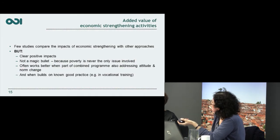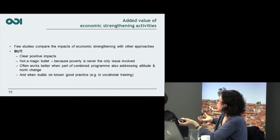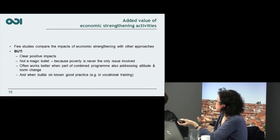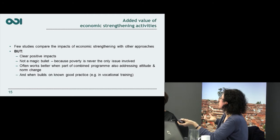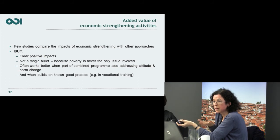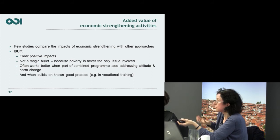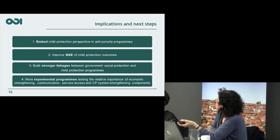Did economic strengthening add value? Few studies compared its impacts with other approaches, but we can say there were some clear positive impacts. It is certainly not a magic bullet, because poverty is never the only issue involved. Economic strengthening appeared to work better when it was part of combined programmes also addressing attitude and norm change. And where it built on established good practice — a higher quality vocational training programme linked into demand for skills — there was a much better chance of reducing protection violations.